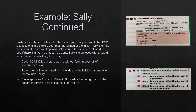Example continued: fast forward three months after the initial injury. Sally returns to her PCP because of a large keloid scar that has formed at the initial injury site. The scar is painful and irritating, and Sally would like the scar evaluated to see if there's anything that can be done. Sally is diagnosed with a keloid scar due to the initial dog bite injury. The code remains the same, S51.832. However, we will be assigning S as the seventh character to recognize that the patient is coming in for a sequela of the injury. In addition to the code for the initial injury, we are also going to assign a code for the keloid scar.